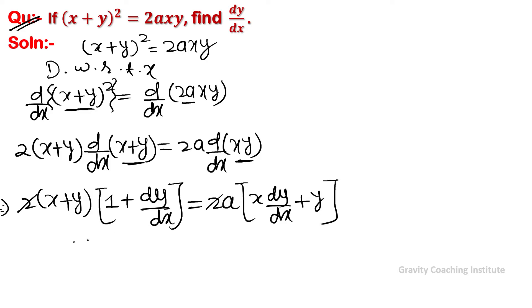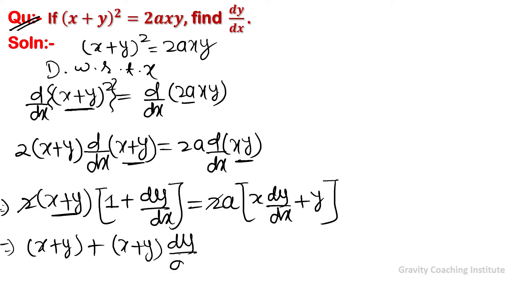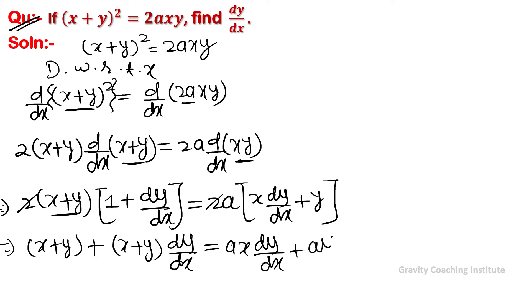We cancel the 2 from both sides. Multiplying out (x + y) on the left: (x + y) + (x + y)·dy/dx equals a·x·dy/dx + ay.